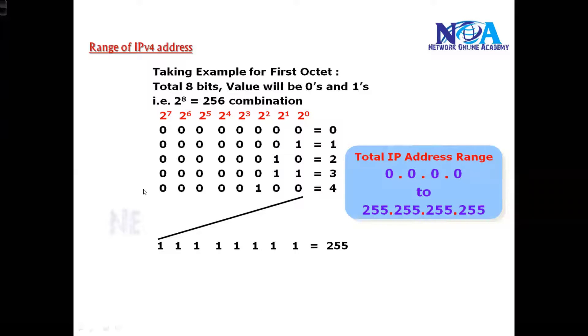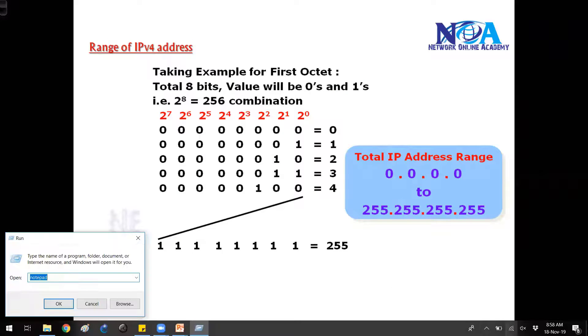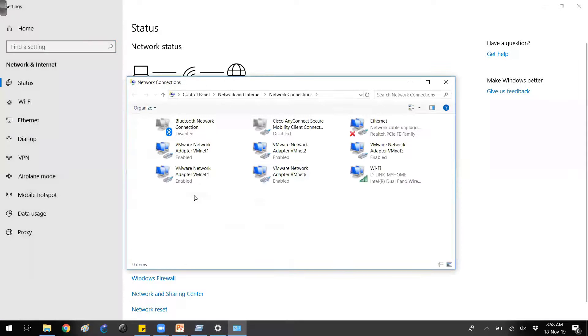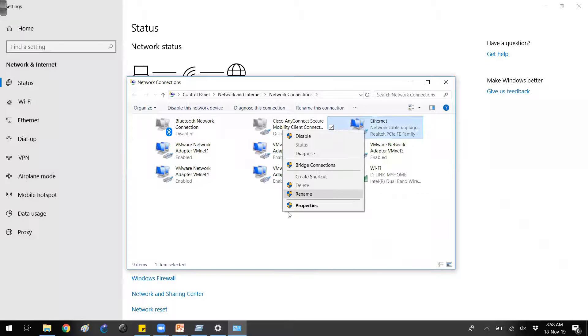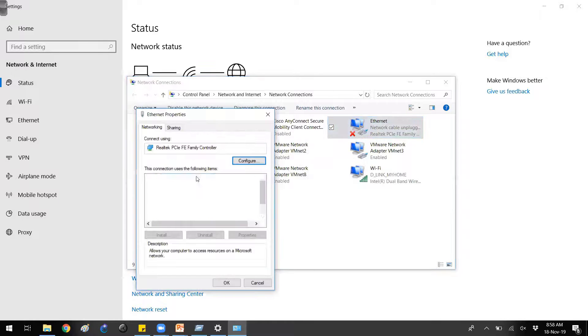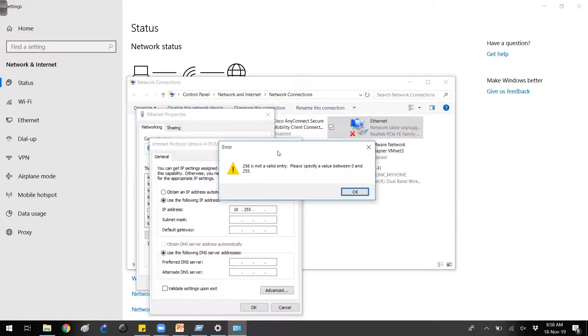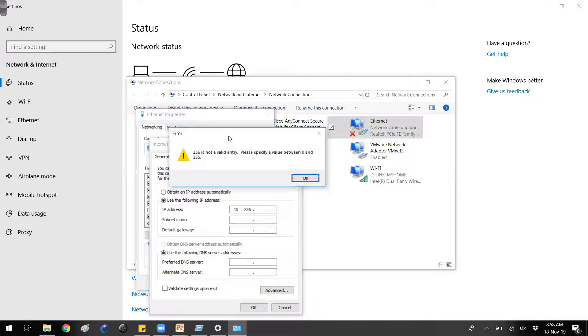If I just go to my network places and try to use some address, something like 10.256—you can see it simply says 256 is not a valid entry. Please specify the values anything in between 0 to 255.